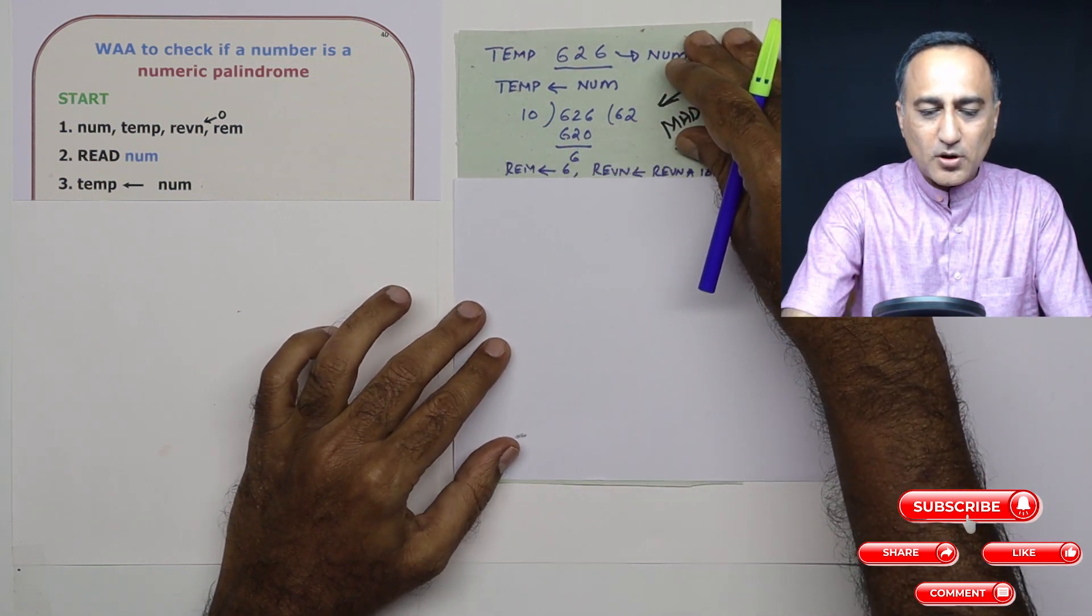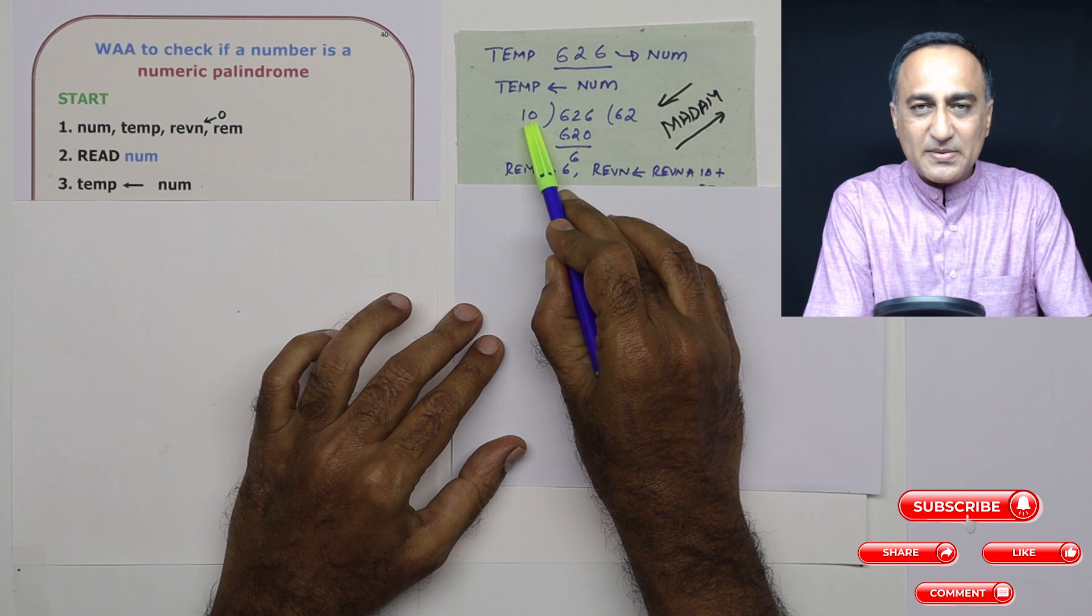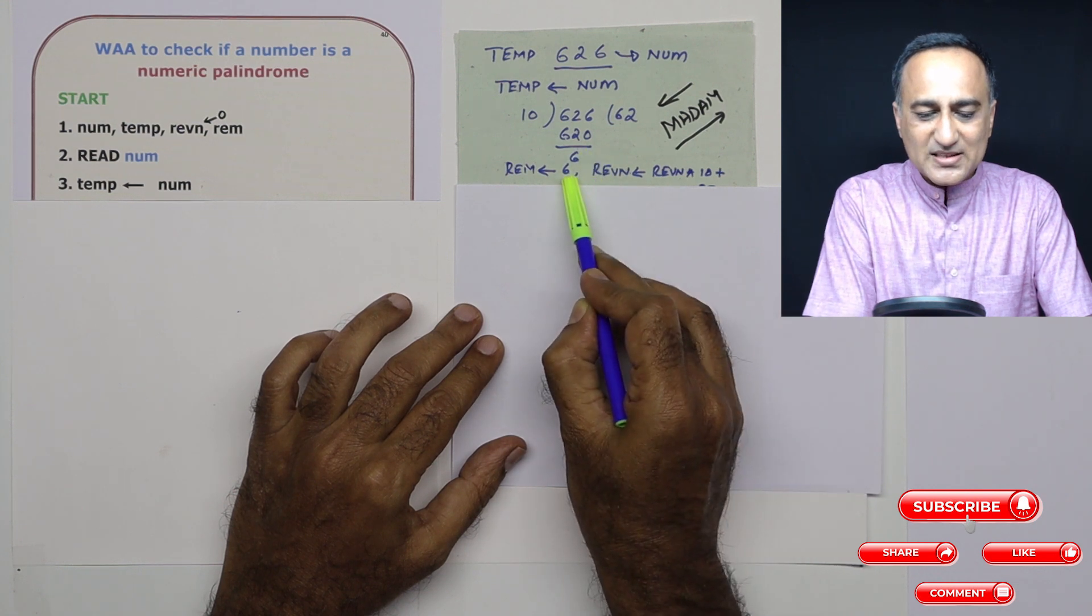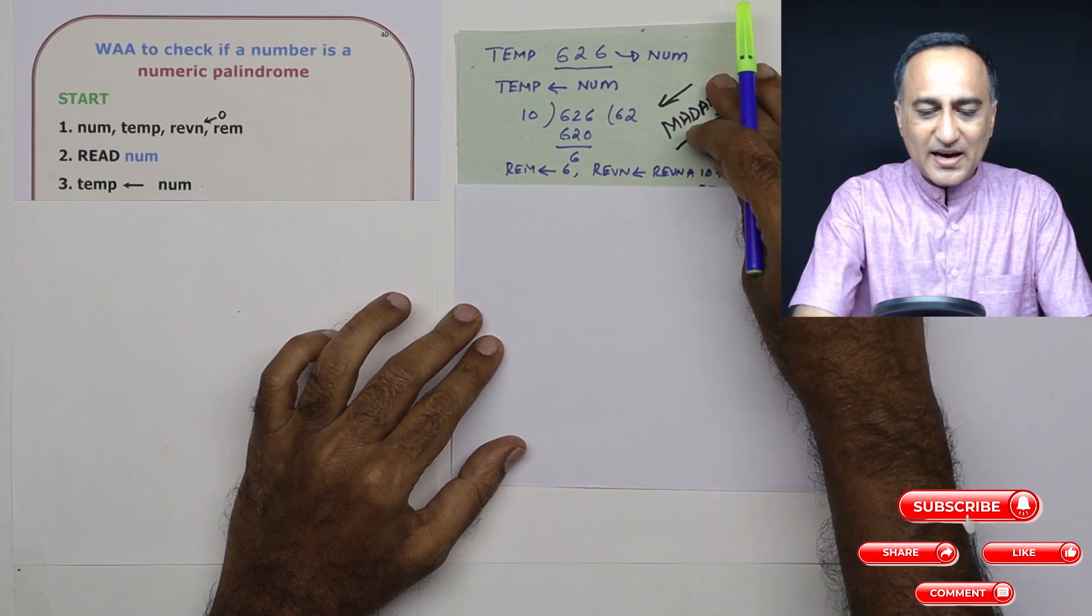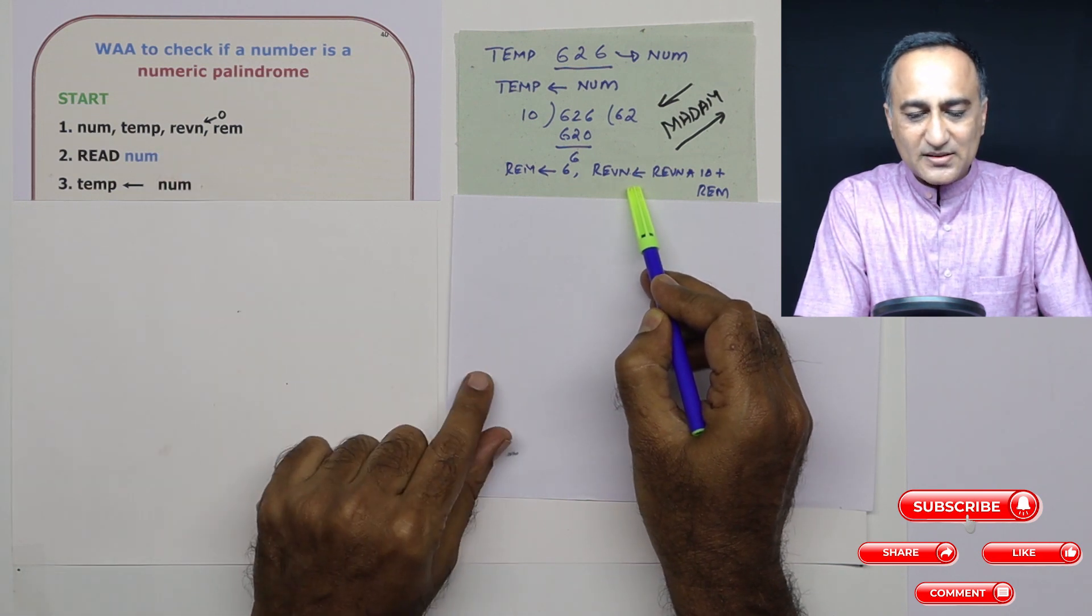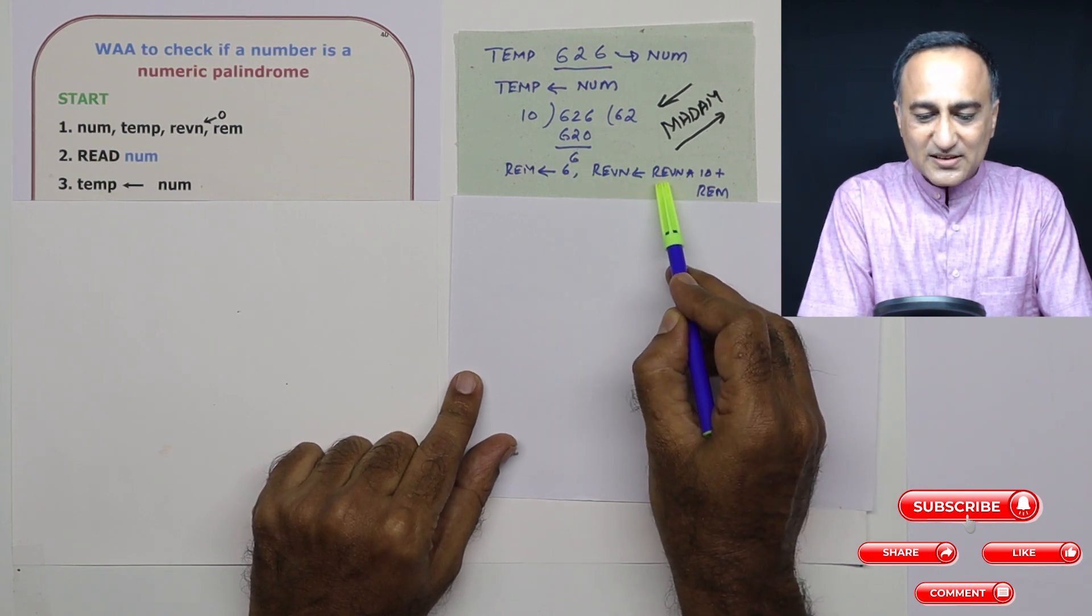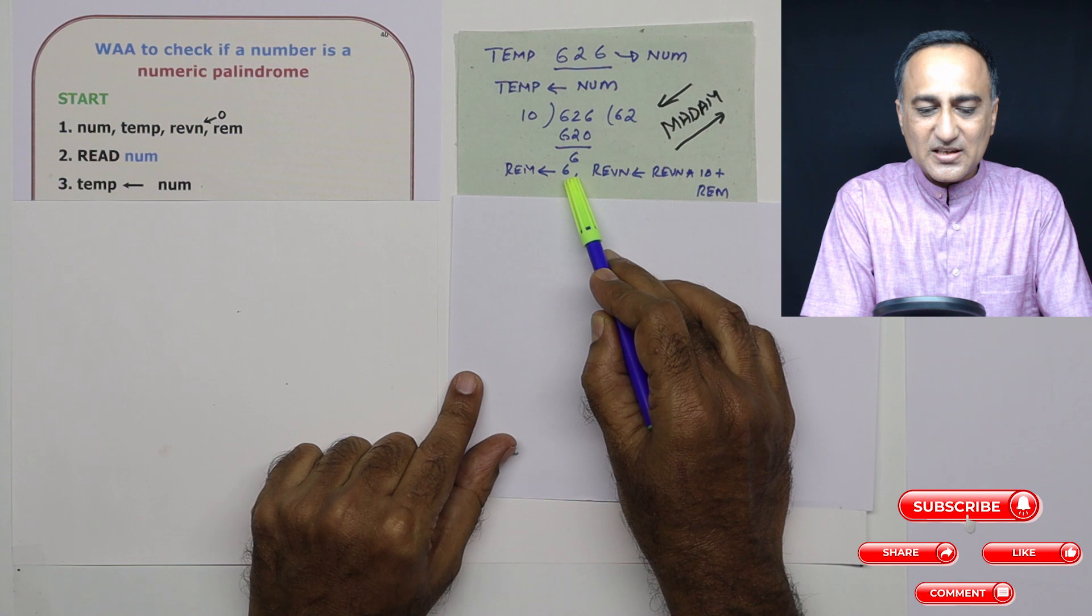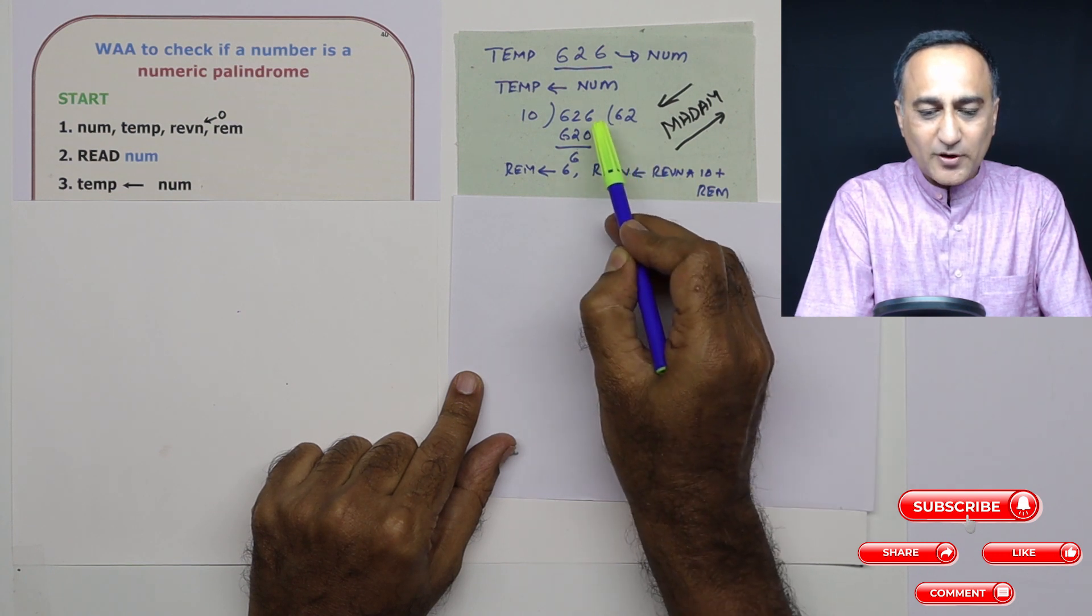So, the first step to get the parts of a number is I will take 626 divided by 10. Since I'm in the base 10 system, I'm going to get 62 as the quotient and 6 as the remainder. I will assign the remainder 6 to a variable called remainder. Then I have taken another variable called reverse of a number, REVN, giving it the initial value zero. So, the first time, since the remainder is 6, this is going to be zero times 10, which is zero plus 6. So, reverse number is 6.